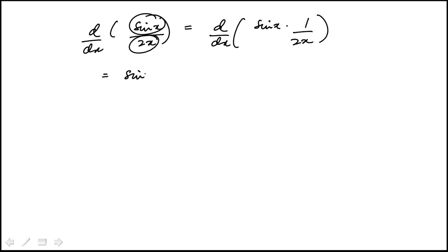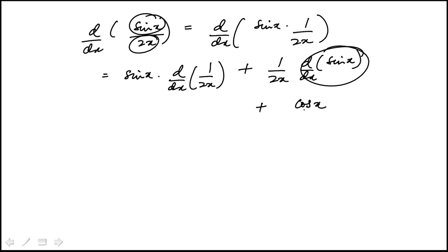So this would be sine x times derivative of 1 over 2x plus 1 over 2x times derivative of sine x. Now derivative of sine x is cosine x, so this piece becomes cosine x over 2x.